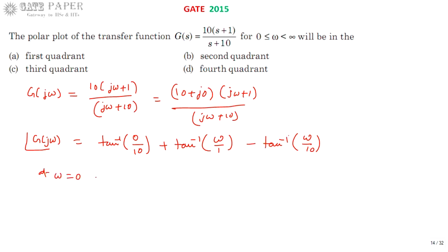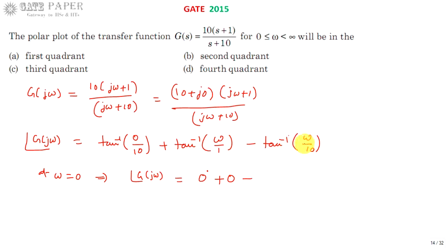At ω = 0: tan⁻¹(0) = 0°, plus tan⁻¹(0) = 0°, minus tan⁻¹(0) = 0°. So the total phase at ω = 0 is 0 degrees.